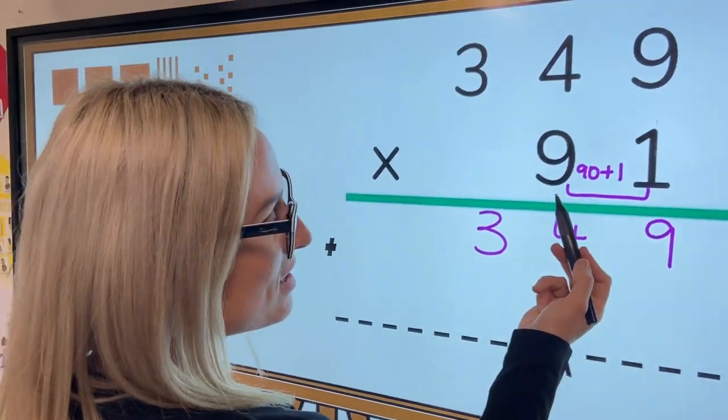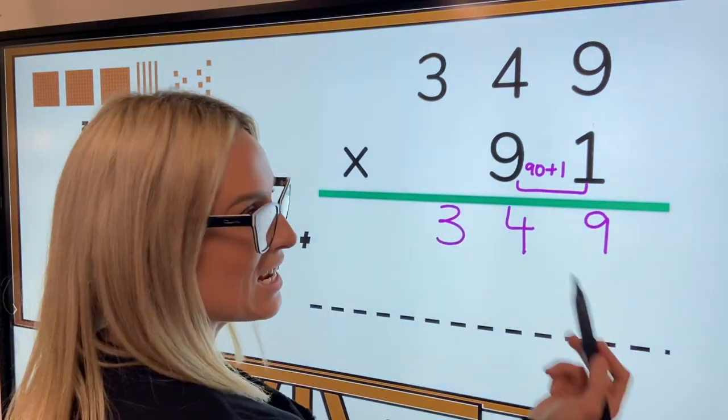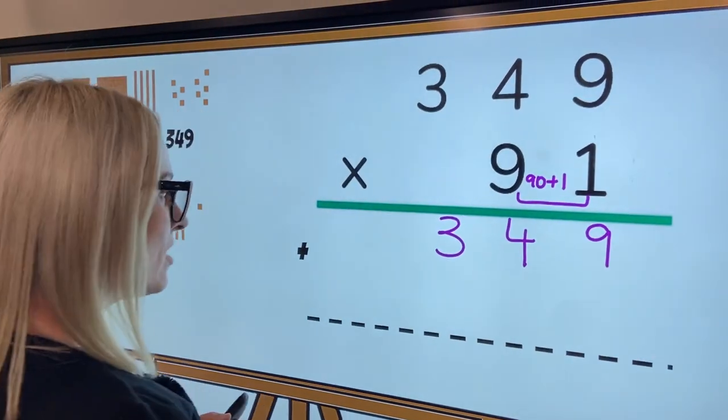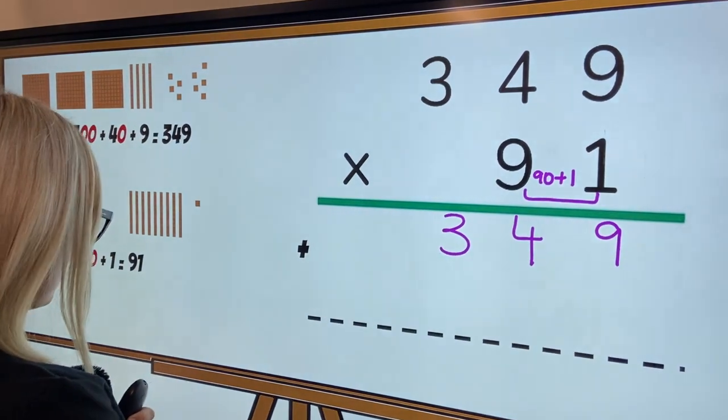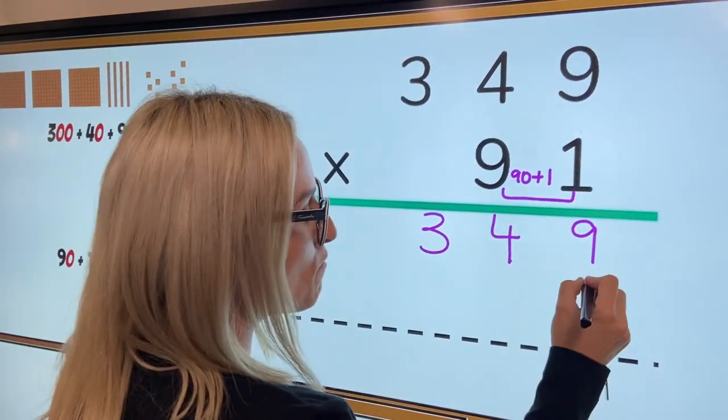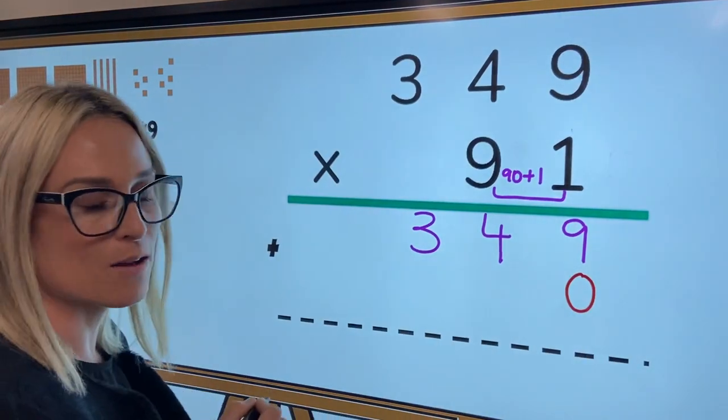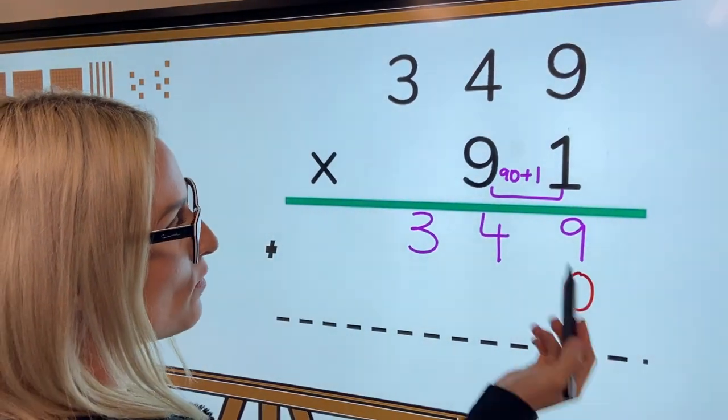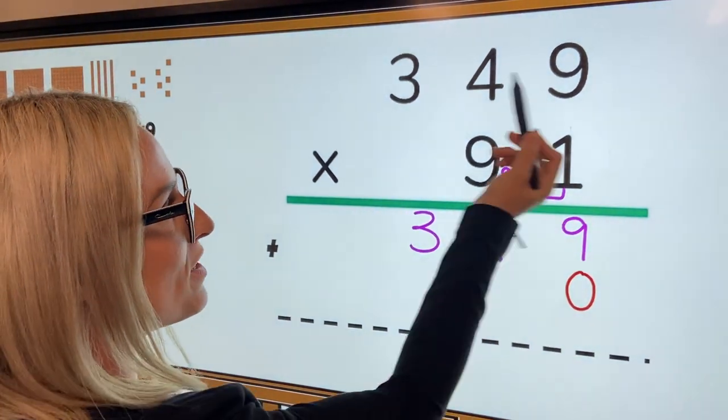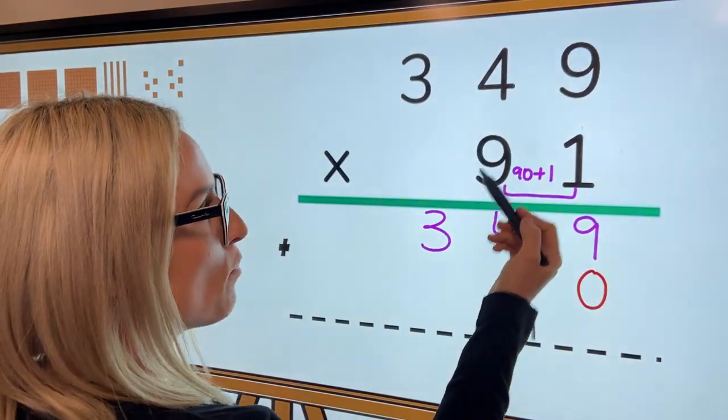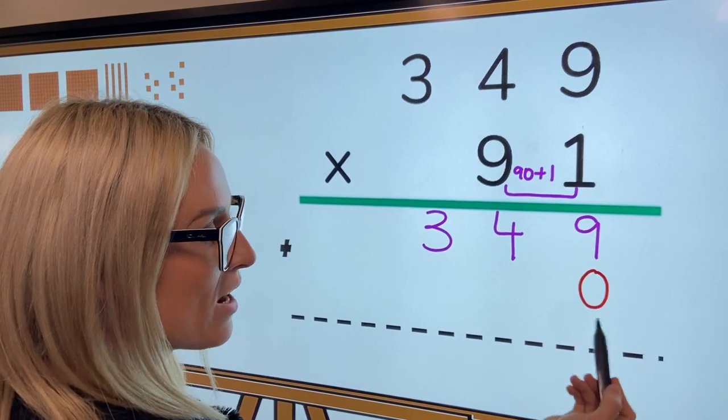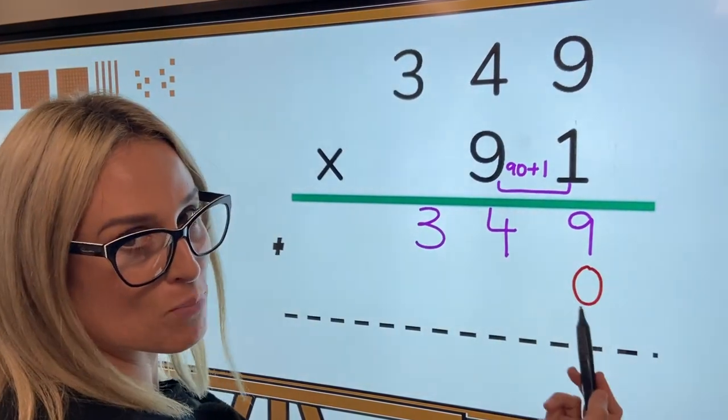So now what we're going to do is really use our rule of zero to come in and save us. And something that I like to do is actually put that in a different color. So what we're going to do now, instead of us having to multiply this whole number 90 times, we're just going to multiply it by nine because we've already got our zero here to save us for that place value.